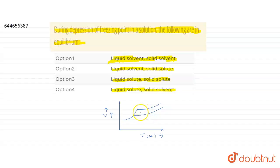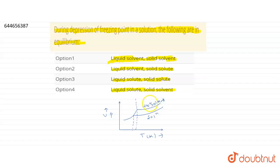This is the basic graph of vapor pressure and temperature. When we add a non-volatile solute in the pure solvent, the vapor pressure of the solution decreases. So this lower curve is for the solution. This region is the liquid solvent, and below this temperature is the frozen solvent, or we can say the frozen solid solvent.